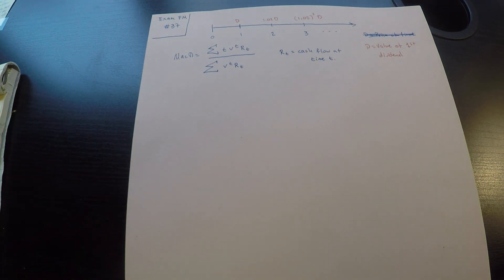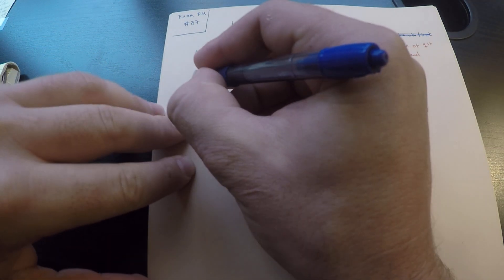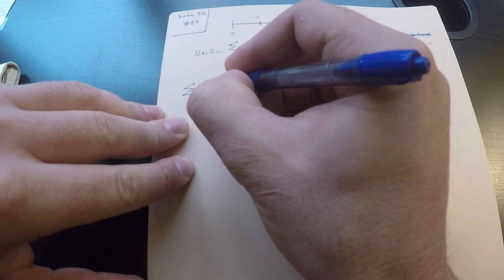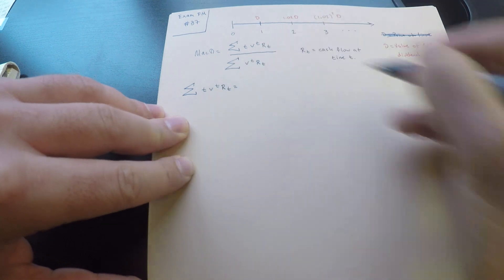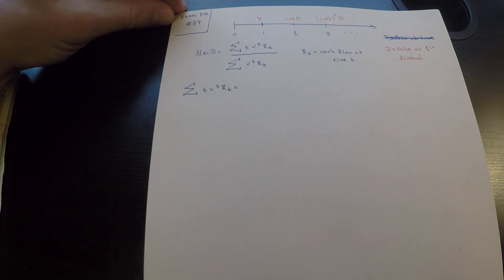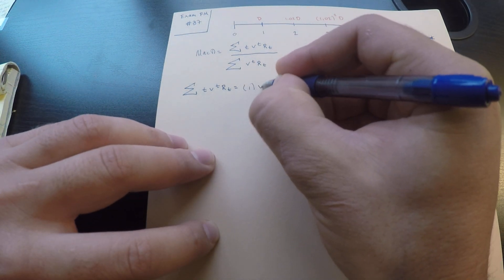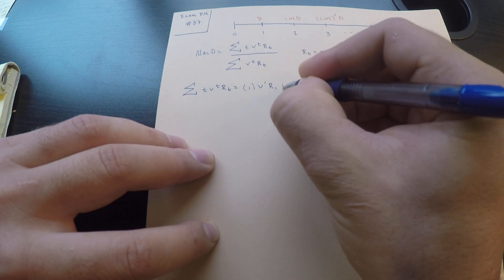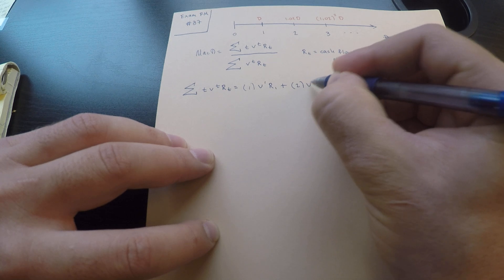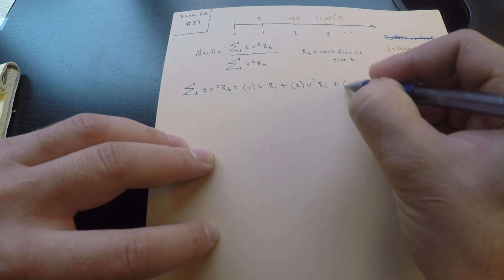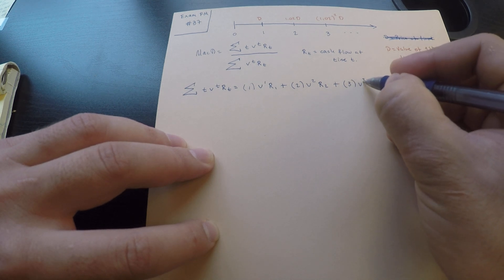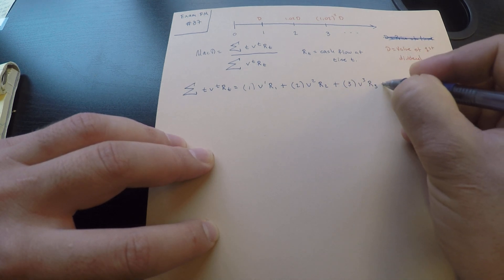Let's compute the numerator first. The sum of T times V^T times R_T expands as: 1 times V^1 times R_1, plus 2 times V² times R_2, plus 3 times V³ times R_3, and so on.